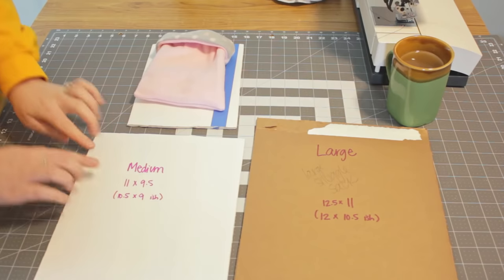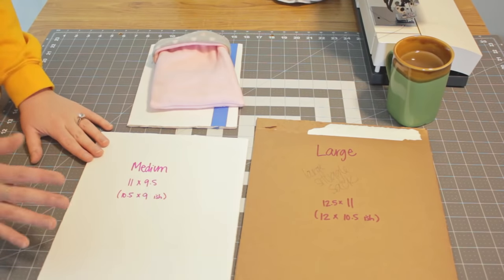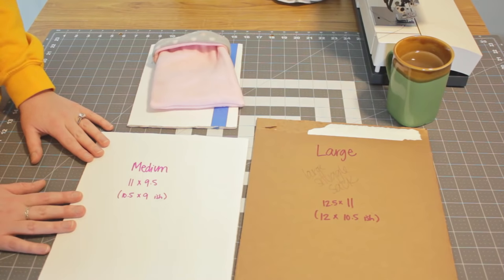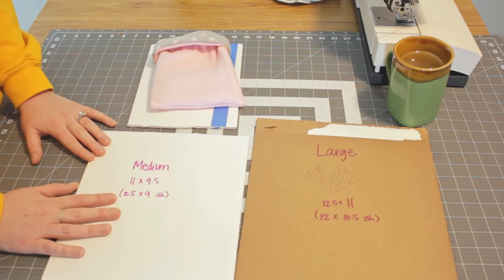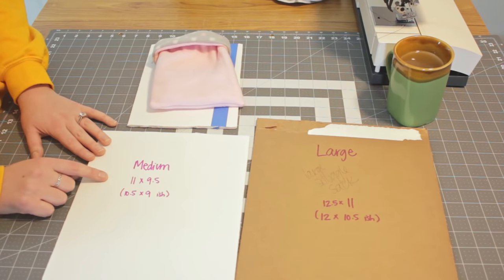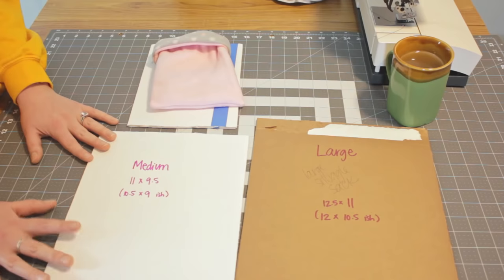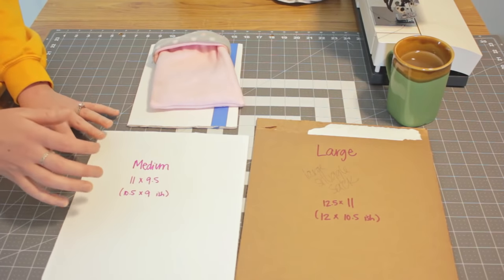The medium measures 11 inches by nine and a half inches. So it ends up being about 10 and a half by nine inches. This is probably my most popular size. In my Etsy listing, if you go check that out in the description, my friend's hedgehog is modeling this in the photos. And he is modeling a medium. It gives him plenty of room to move around and burrow in.